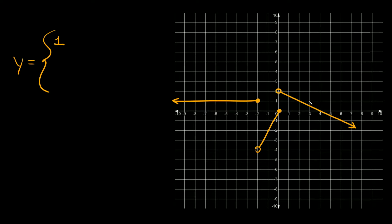This graph obviously doesn't just run all the way straight through — we stop it right here at negative two. So y is equal to one is valid from negative two and then the numbers just get smaller and smaller. We can say y is equal to one is valid if x is less than or equal to negative two. The reason it's less than or equal to is because the circle right here is filled in, which means the equal to symbol is attached.